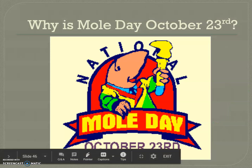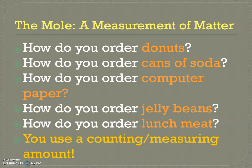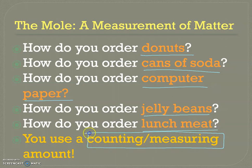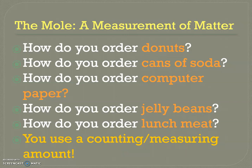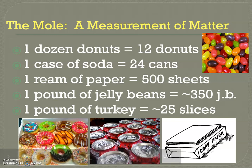Now that we have a definition, let's wrap our head around why we need a mole. We measure things in quantities — if you order donuts, get cans of soda, buy computer paper, purchase jelly beans, or order lunch meat, you use different systems of counting or measuring. We use quantities or mass depending on the size of the item. We order donuts by the dozen — 12. A case of soda is 24. A ream of paper is 500 sheets.